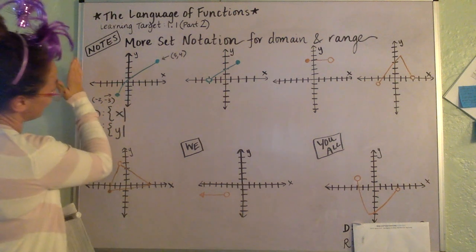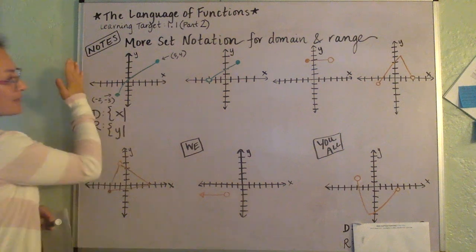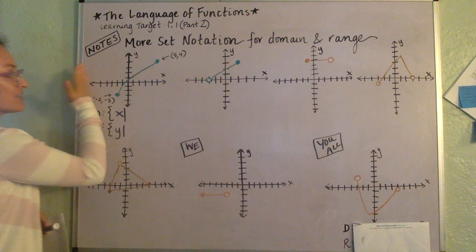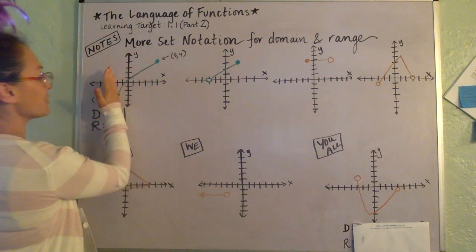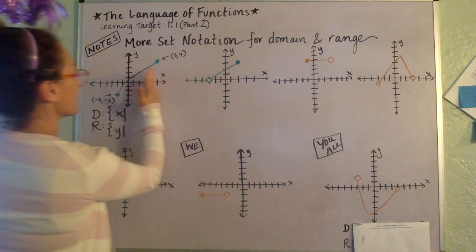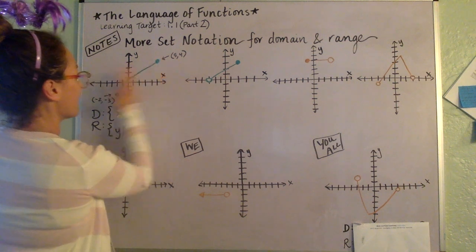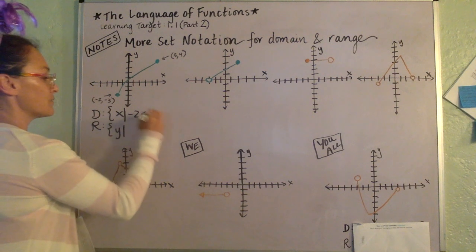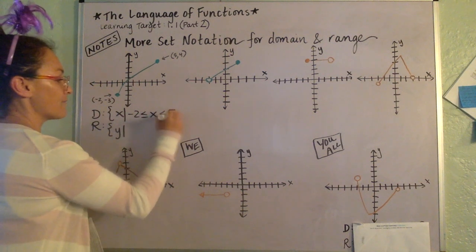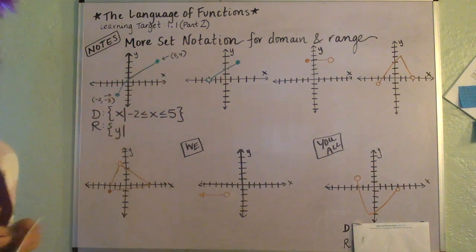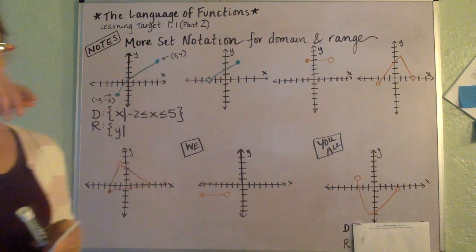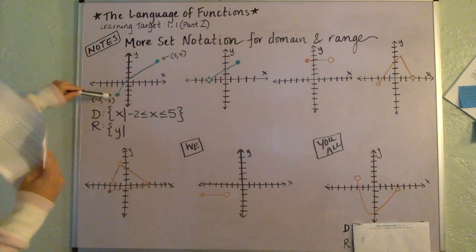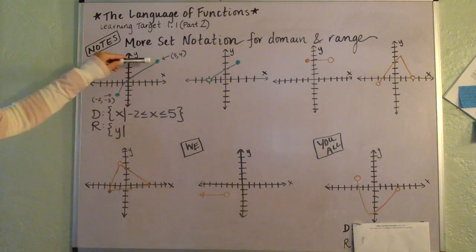So remember domain — that's a scan side to side, always from left to right. Where are you seeing this function happen? Scan: it's going from negative two all the way over to five. From negative two to five, that's where the function happens. And you can see clearly that there are dots on either end, so it's included at that spot — it ends exactly at negative two and five.